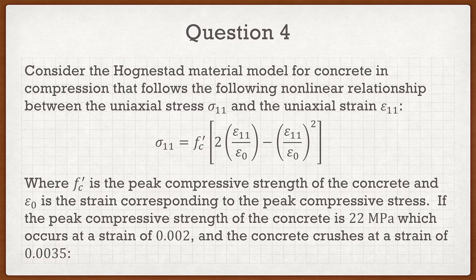It says: consider the Hognestad material model for concrete in compression that follows a nonlinear relationship between the uniaxial stress sigma_11 and the uniaxial strain epsilon_11. We're given a nice formula, and right away we can tell this is not going to be a linear formula. This formula has two extra parameters: f'c, which is the peak compressive strength of the concrete, and epsilon_0, which is the strain corresponding to that peak compressive stress.